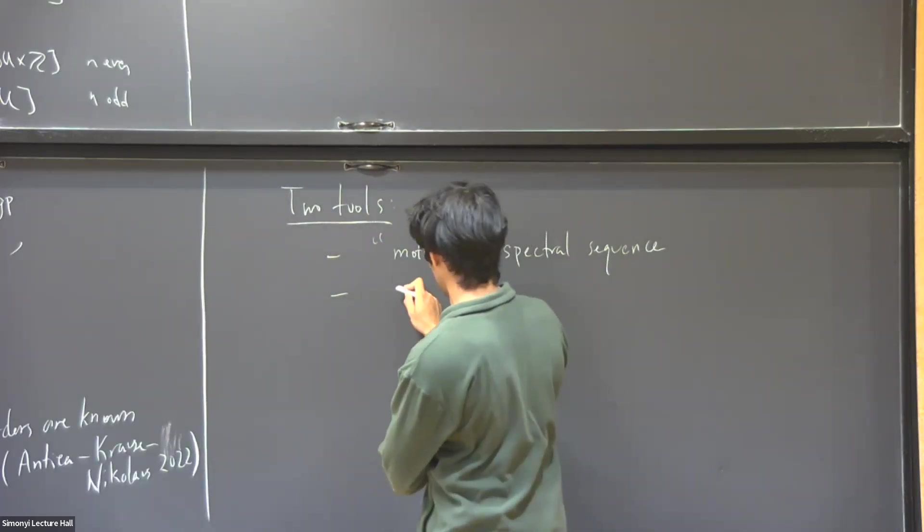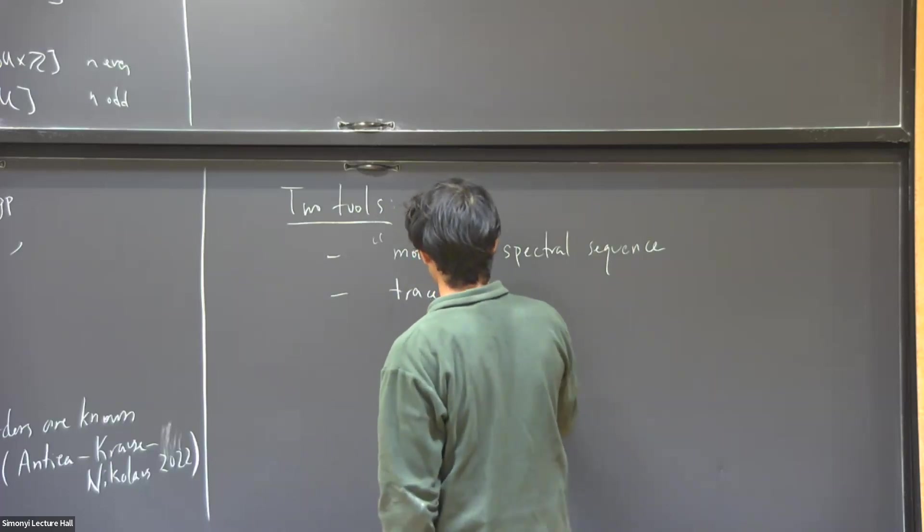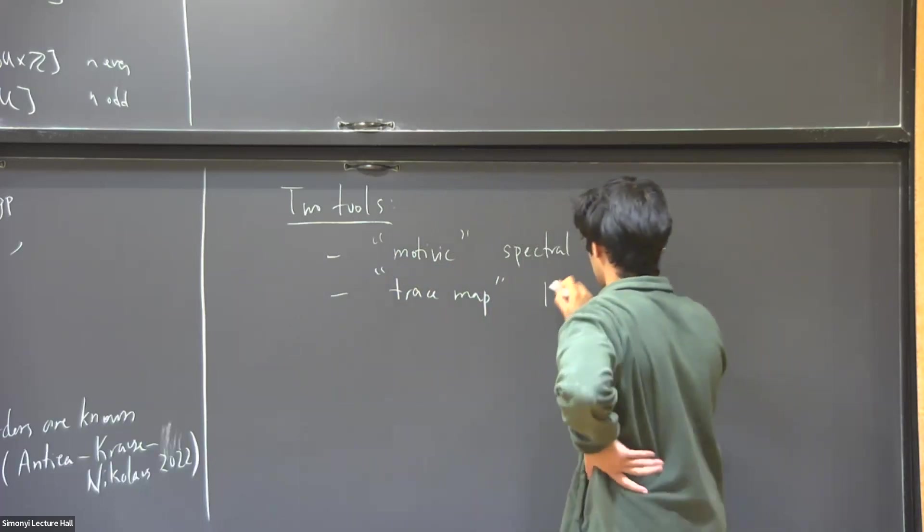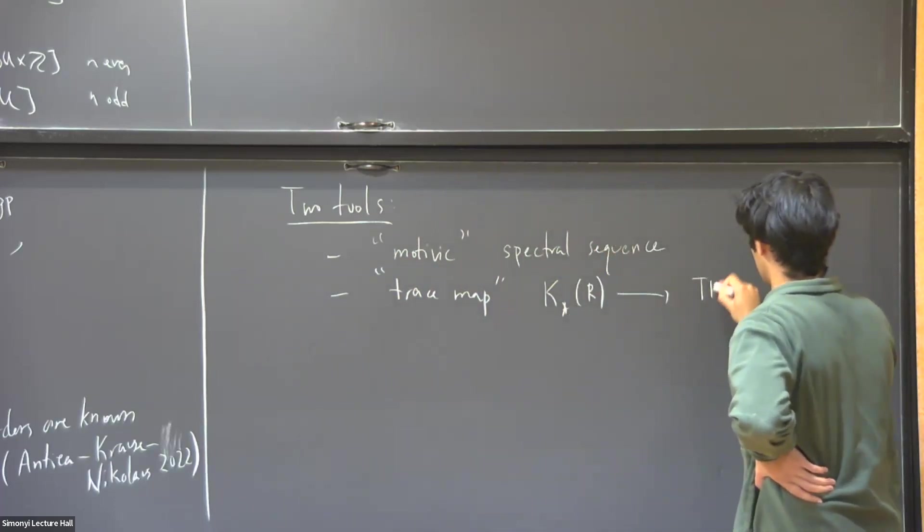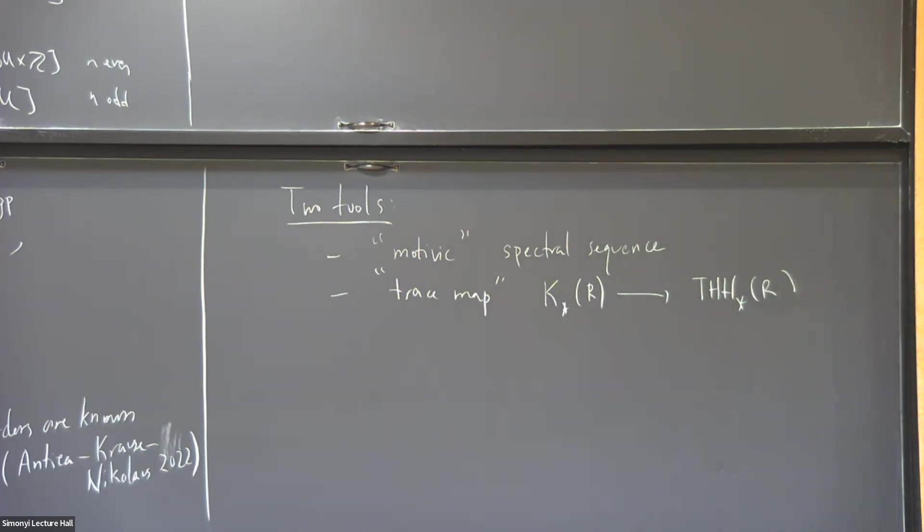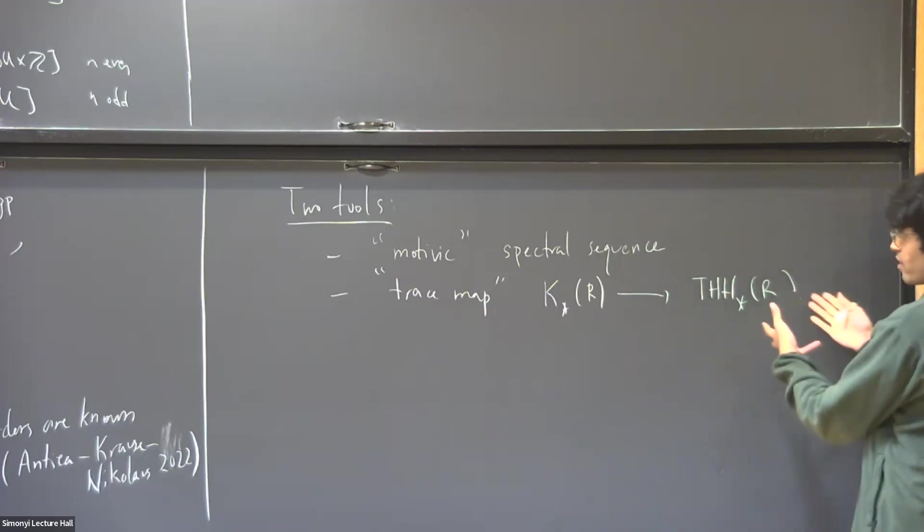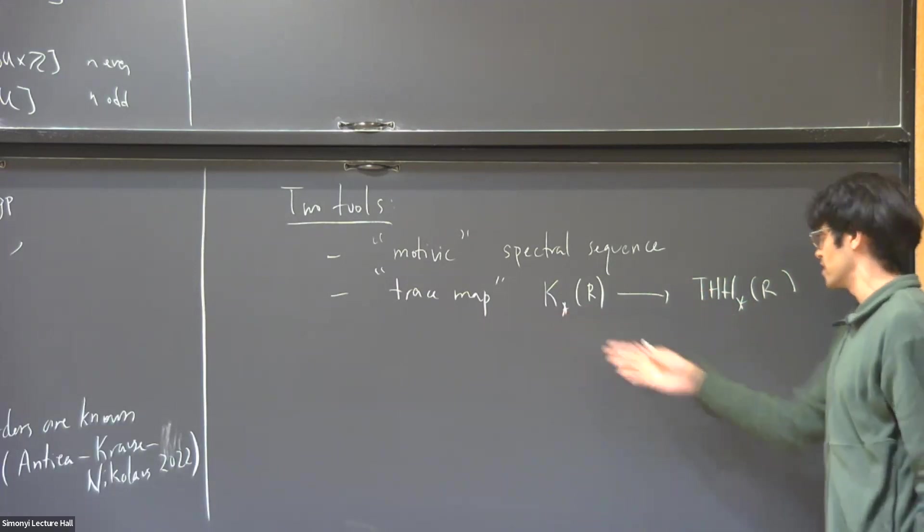And then another tool is a certain map called a trace map from these K-groups to another invariant called the topological Hochschild homology. So let me not define this. It's just some other invariant which receives a map, and it gives you a lot. It's a good tool for getting information about this side.